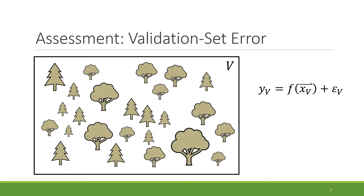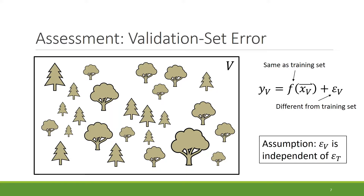Instead, we can use a validation set, which is an independently collected set of data from the same population. We still fit a model on our training set, but now we evaluate it on our validation set. This works because validation set points are still generated by the same F, but they have a different set of errors, epsilon V. Models that memorize epsilon T will now perform poorly, while models that actually learned F will do well. An important assumption is that the validation set is independent from the training set — the signal F should be the same, but the noise should be completely independent.